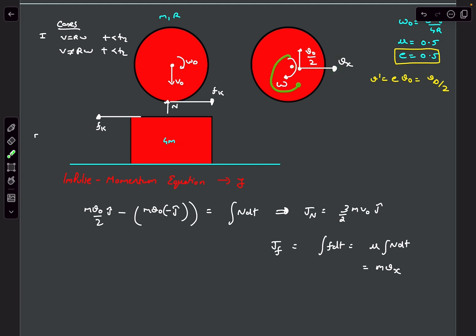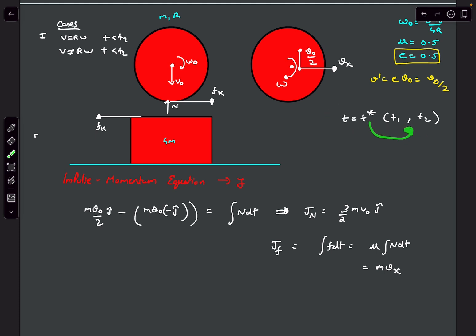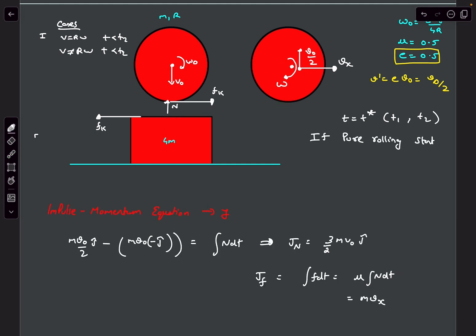There might be some time t_star within the collision interval [T1, T2] at which slipping between the surfaces actually stops — meaning the sphere starts pure rolling on the plank at t equals t_star.